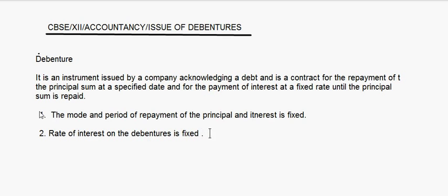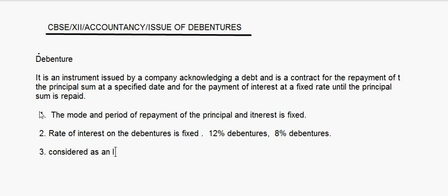If we have something like 12% debentures, it means the rate of interest is 12%. If we have 8% debentures, it means the rate of interest is 8%. Debentures are considered a long-term borrowing which comes under non-current liabilities.